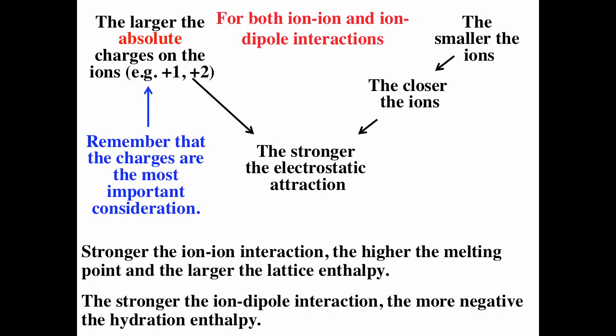For both ion-ion and ion-dipole interactions, the larger the absolute charge is the most important consideration: bigger charge means stronger electrostatic attraction and greater stability. Smaller ions get closer together, also giving stronger electrostatic attraction. The stronger the ion-ion interaction, the higher the melting point and the larger the lattice enthalpy. The stronger the ion-dipole interaction, the more negative the hydration enthalpy. Ion-ion interactions govern ionic solids, while ion-dipole interactions are key when dissolving ions in water.